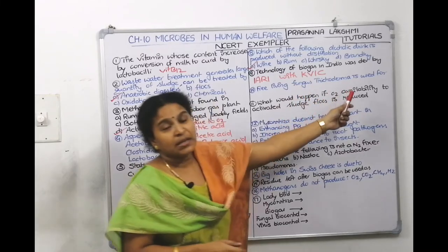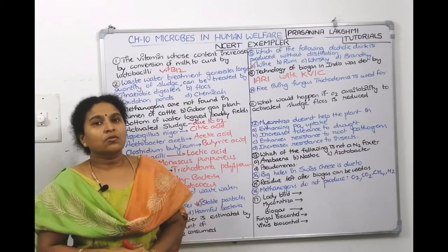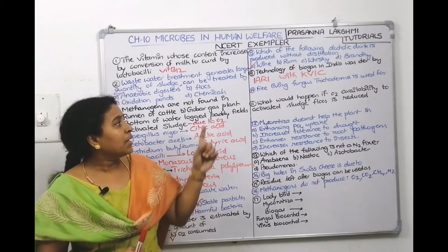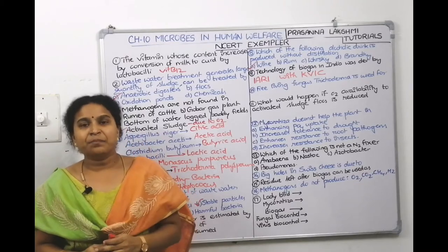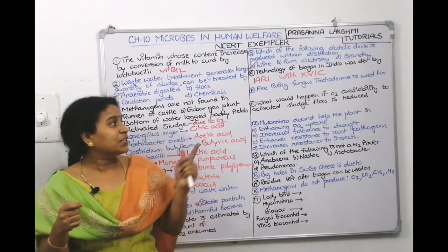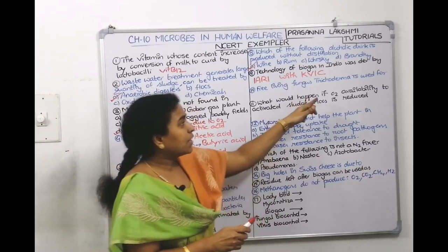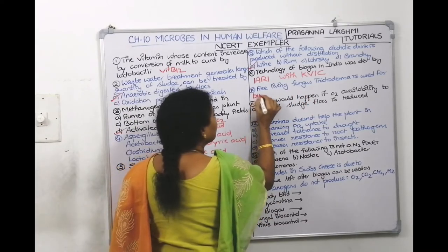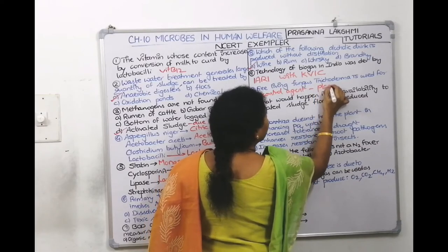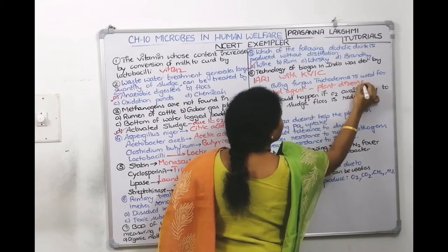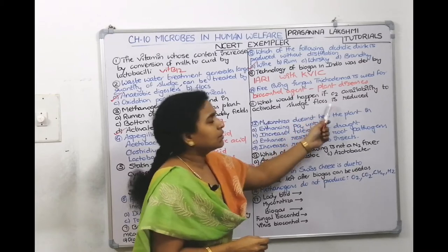Tenth question: free-living fungus Trichoderma is used as — under biocontrol agents, we study Trichoderma. When the roots of a plant are infested with Trichoderma, it acts as a biocontrol agent — it does not allow plant pathogens to cause disease, thus preventing plant diseases.